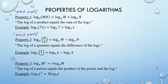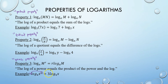Lastly, property 3 is perhaps the most interesting: if you have a power within a log — a base m to a power r — you can bring that power out front of the log. The log of a power equals the product of the power and the log. So log base 4 of x cubed: you take that power on the quantity inside the log and bring it out front.